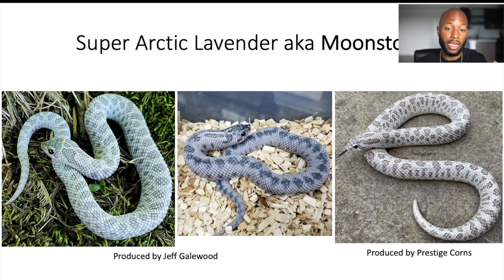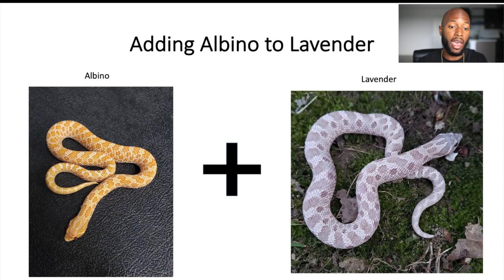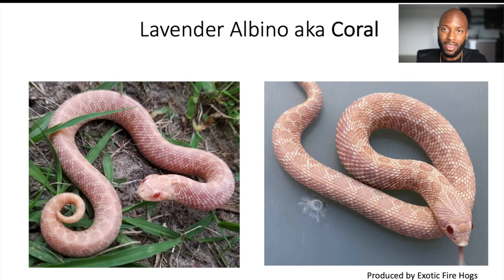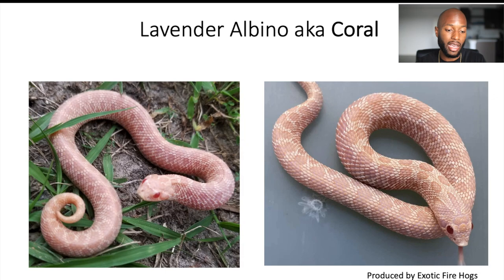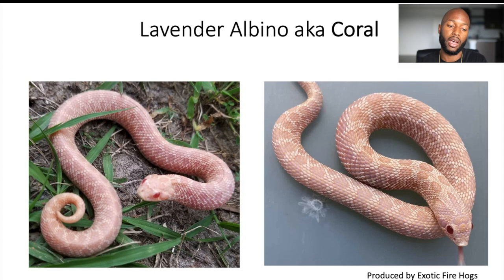With the incomplete dominant genes covered, let's get into some recessive genes mixed with the lavender. The first one is adding the albino gene — also recessive — to the lavender. What you get is a snake called a coral: a pink, almost salmon-colored hog nose snake. This snake actually reminds me of my snake Cheeto when she's in shed. I wasn't able to find coral condos, and definitely not coral super condas, but this has a lot of untapped potential. Just imagine this snake with a reduced pattern or completely patternless — it would probably look like a worm.